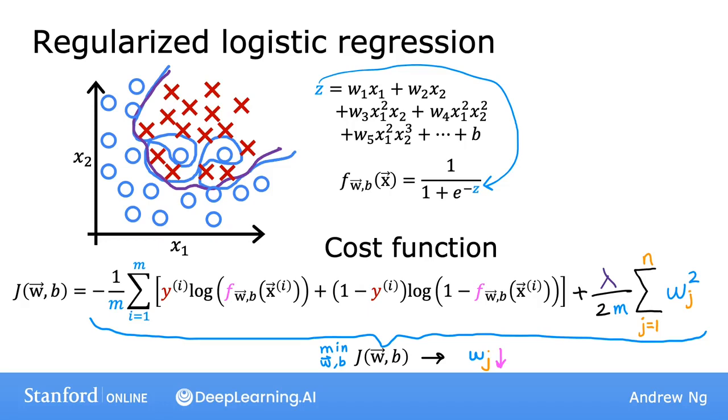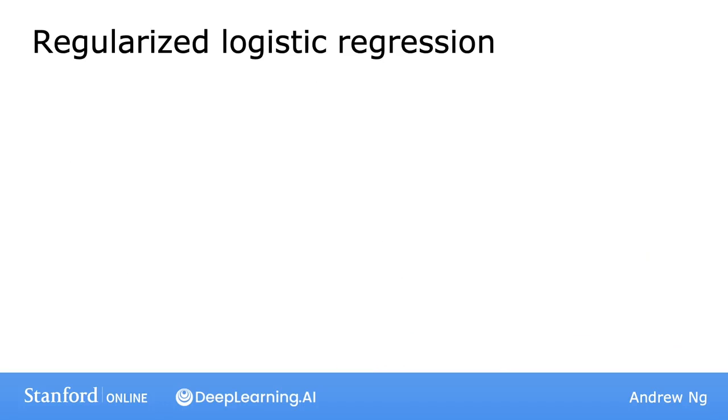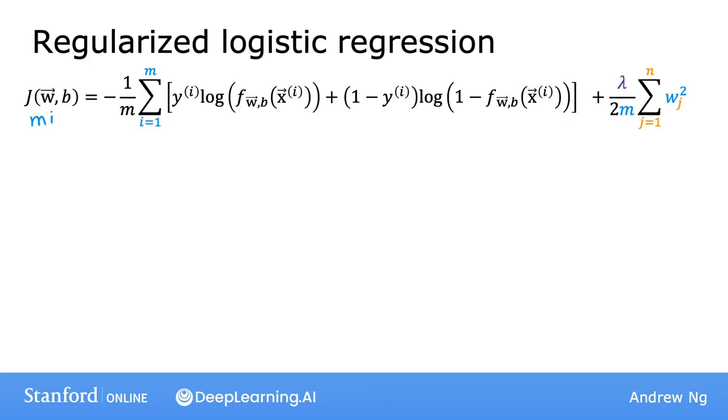So, when using regularization, even when you have a lot of features, how can you actually implement this? How can you actually minimize this cost function J(w,b) that includes the regularization term? Well, let's use gradient descent as before. So, here's the cost function that you want to minimize.